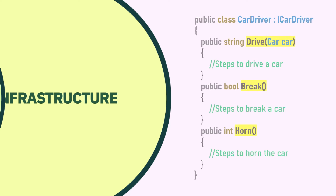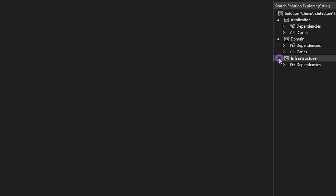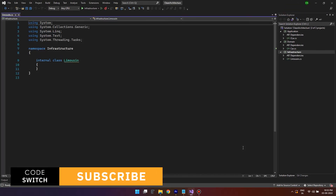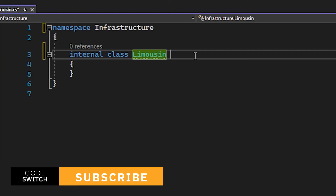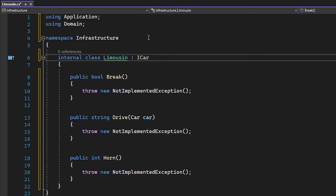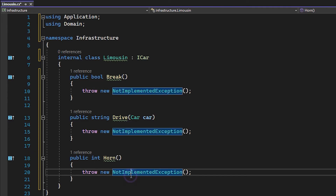Now we will discuss the last layer, which is our infrastructure layer. This is where things really start to move. Here, instead of working with interfaces, we will implement them in a concrete class. For our example, we can create an implementation of car — let's say Limousine. If Limousine implements our ICar interface, it should define everything ICar can do. Here we can write how to drive a Limousine, how to brake a Limousine, and how a Limousine should horn.